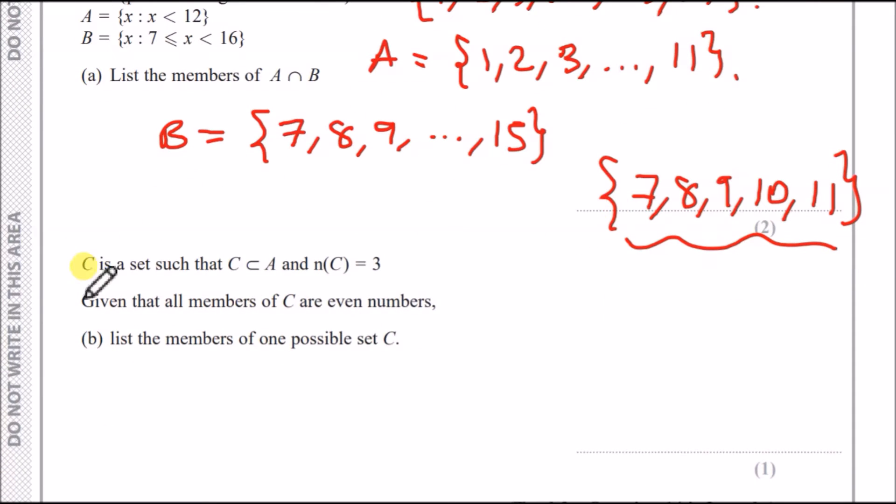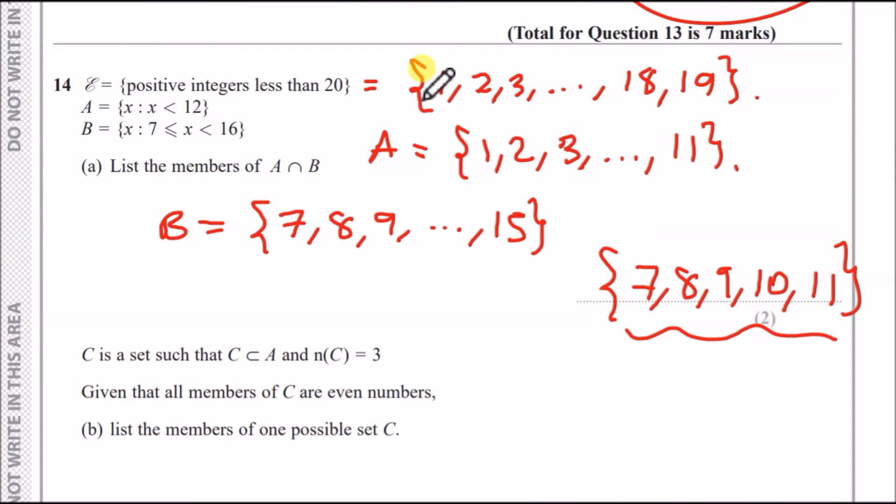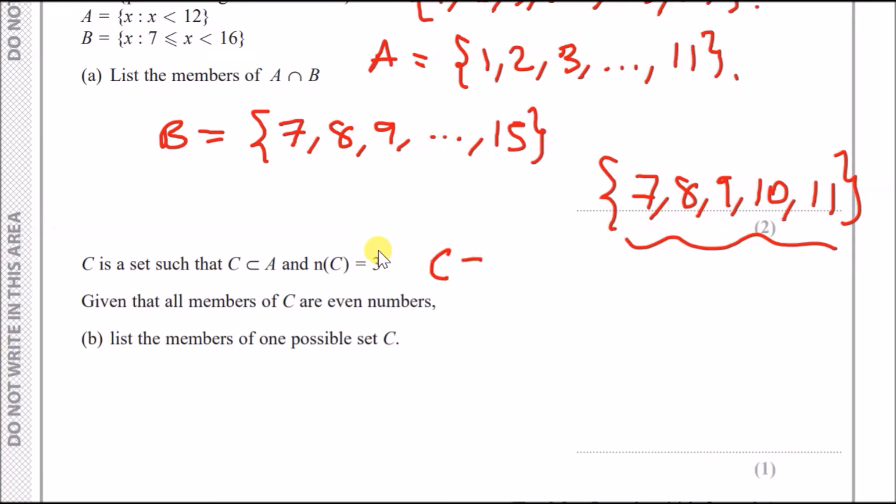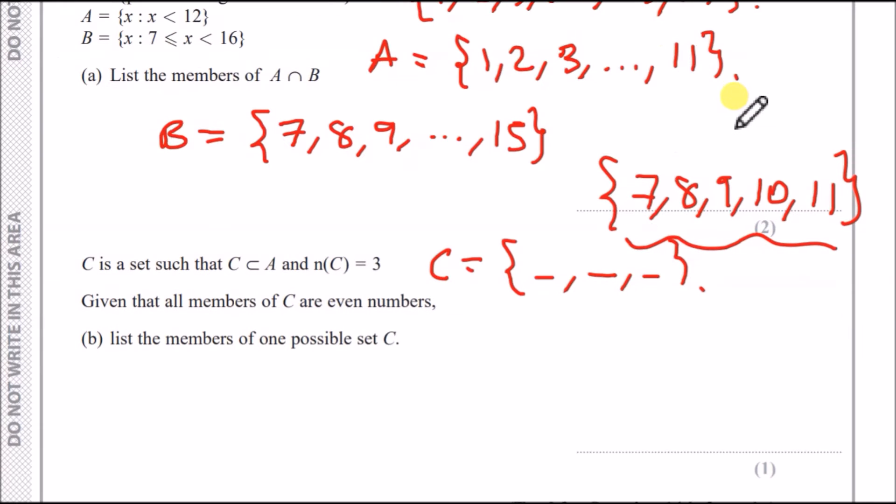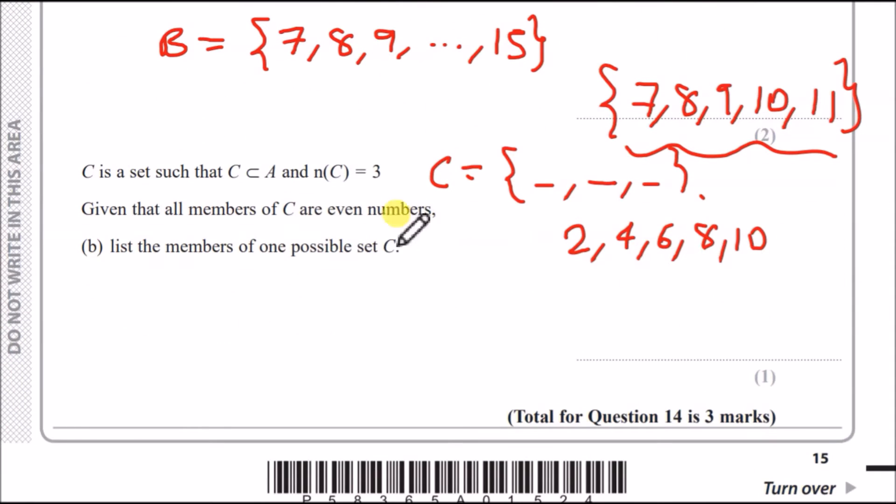For the next part, we have a new set C, which is a set such that C is a subset of A, meaning C is actually inside of A. And the number of terms of C is 3. So C basically consists of 1, 2, 3 numbers. Now, given that all members of C are even numbers, so far C is a subset of A. So it could possibly be 2, 4, 6, 8, or 10. There's only going to be 3 of them. List the members of one possible set of C. It's actually not bad. You just pick any 3 random even numbers. So let's just say 2, 4, 6.